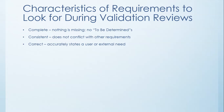Another thing to look for is the correctness of the requirement — that it accurately states a user or external need. The next thing a requirement has to be is feasible, meaning it can be implemented within known constraints. For example, a requirement that says 'we need to be able to build a time machine' probably isn't a good requirement.